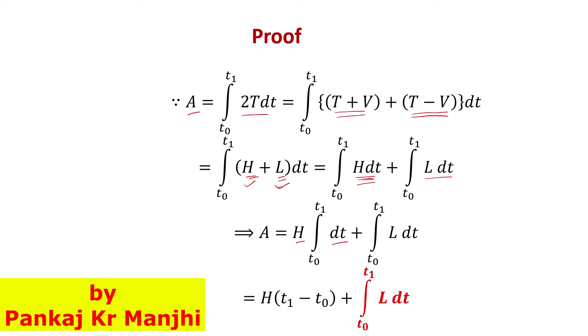This is the Hamiltonian, and this is Hamilton's principal function. So A = H(t1 - t0) plus Hamilton's principal function S. Therefore, A = H(t1 - t0) + S, where S is Hamilton's principal function.